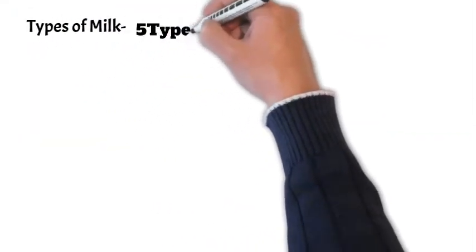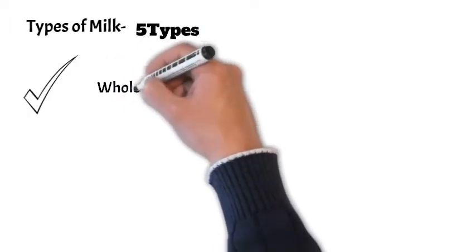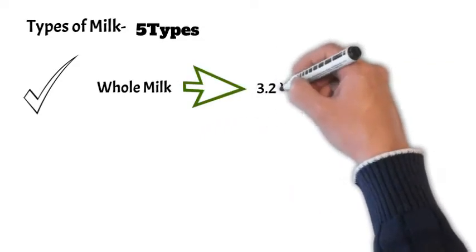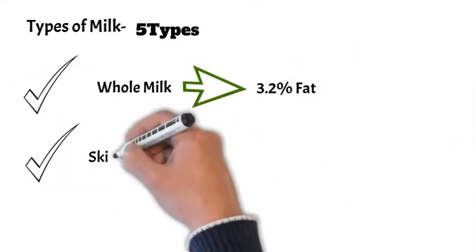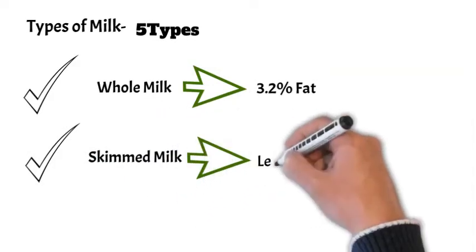There are five types of milk. The first one is whole milk, which contains about 3.2% of fat. The second one is skim milk, which has less than 1% of fat.